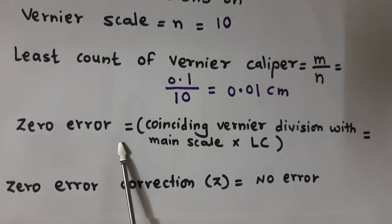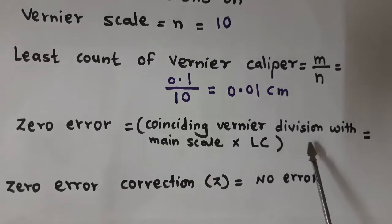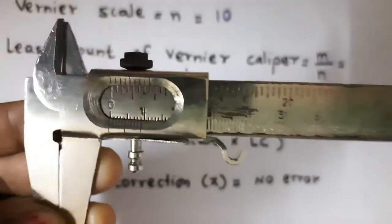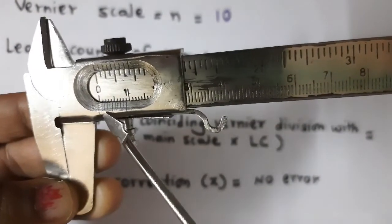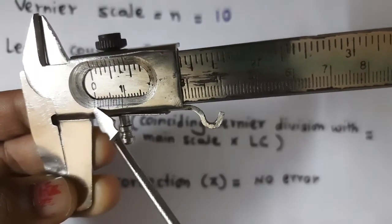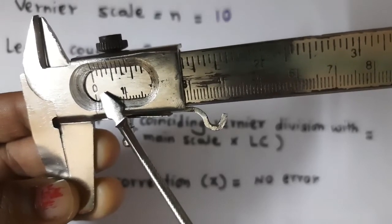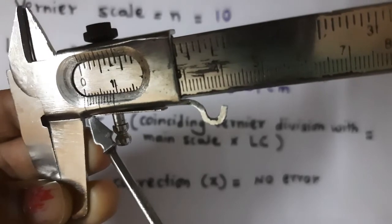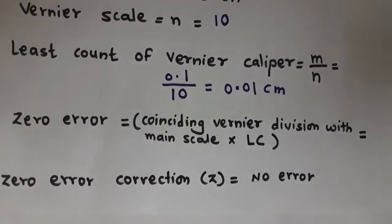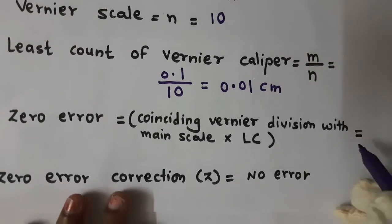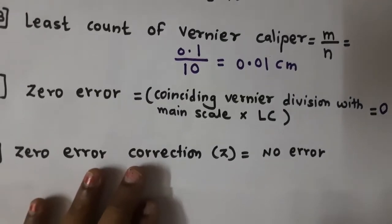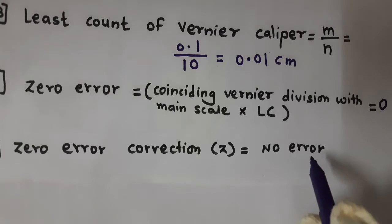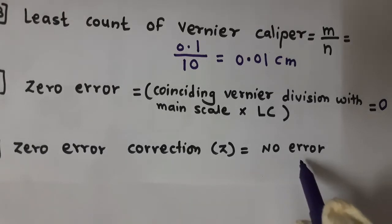Zero error equals the coinciding Vernier division with the main scale, multiplied by the least count. If you observe this Vernier Caliper, the zero division of the Vernier scale exactly matches with the zero of the main scale. It means there is no zero error. So zero error is 0, and the zero error correction is no error.